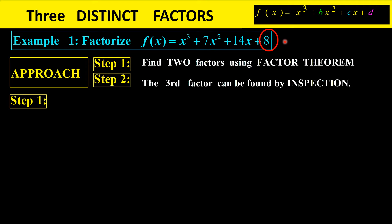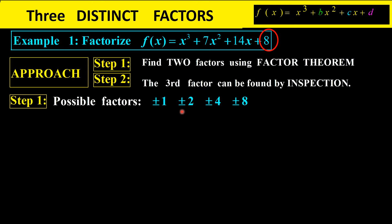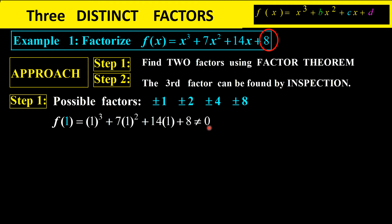Taking the example x cubed plus 7x squared plus 14x plus 8, with a leading coefficient of 1. Step one: find two factors. The possible factors come from 8: plus or minus 1, plus or minus 2, plus or minus 4, plus or minus 8. Starting with f(1): substituting gives 1 plus 7 plus 14 plus 8, which is not 0. Substituting f(negative 1) does give 0, so x plus 1 is a factor.